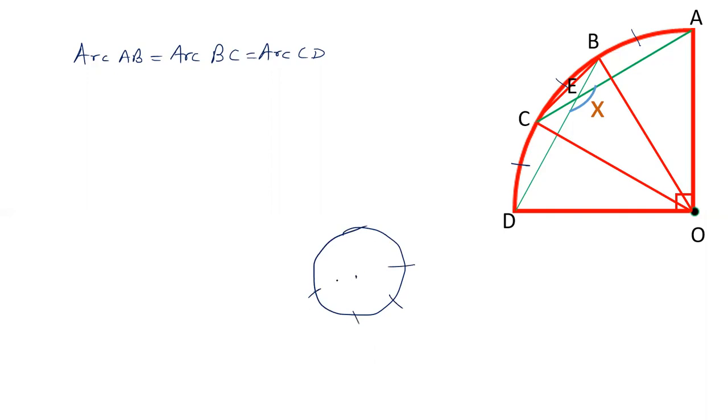There is a property that equal arcs subtend equal angles at the center. So if two arcs are equal, the angle subtended by the two arcs at the center will be equal. Here there are three arcs and the angles subtended by these arcs at the center are equal. Let's say these angles are theta.